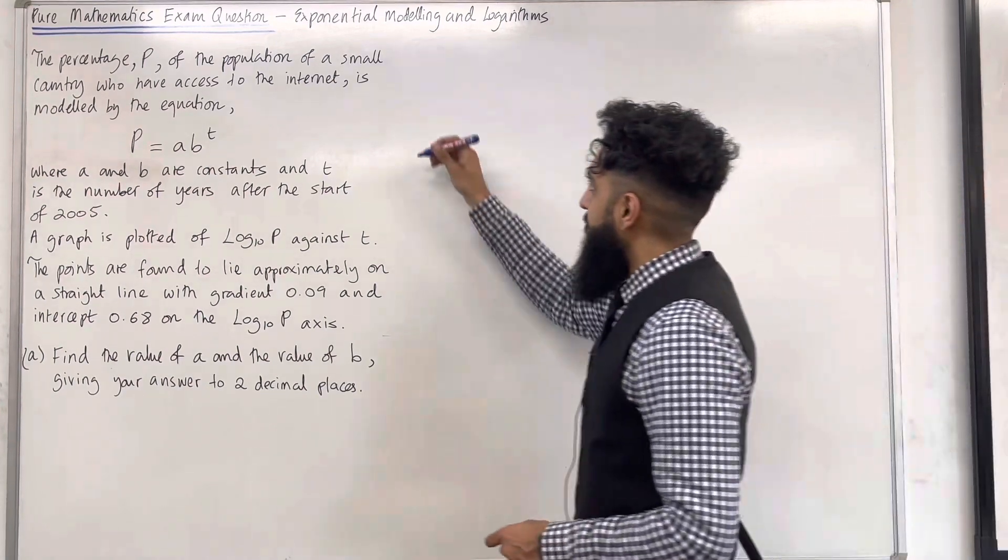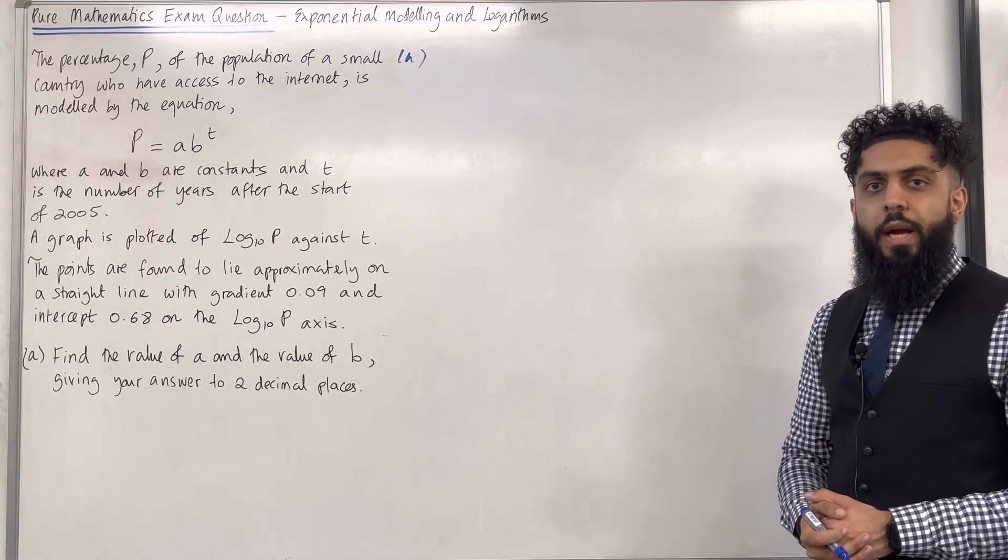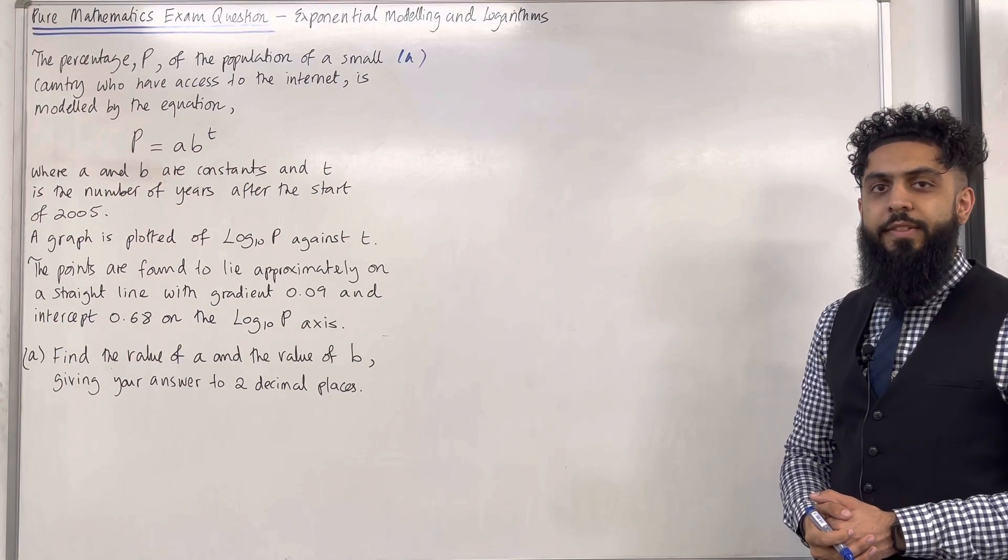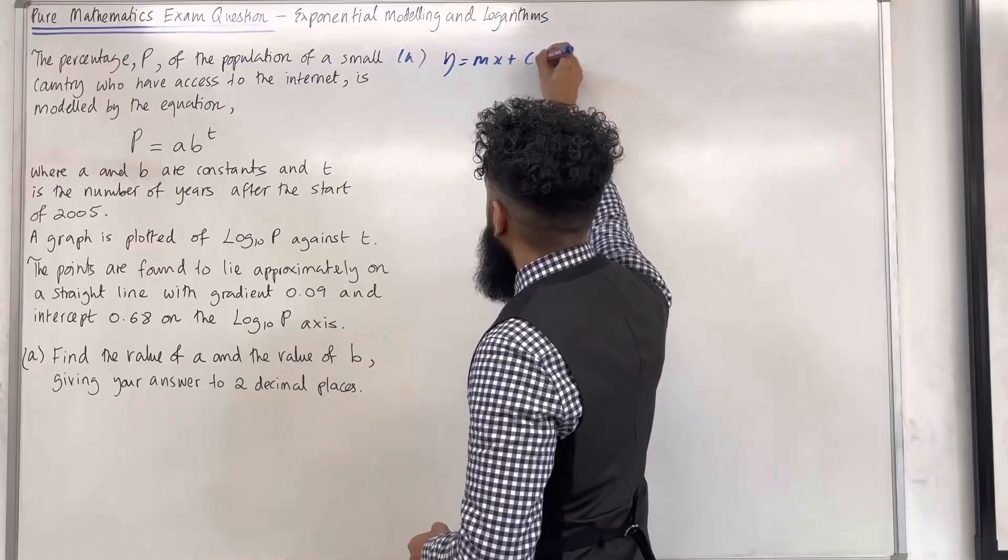Let's have a look at the solution to part A. Now we know that the equation of a straight line with gradient M and Y intercept C is given by Y equals MX plus C.